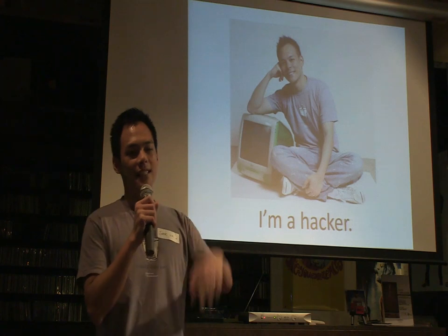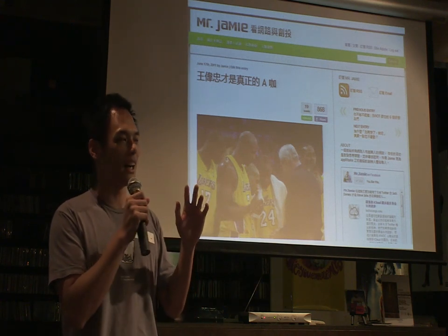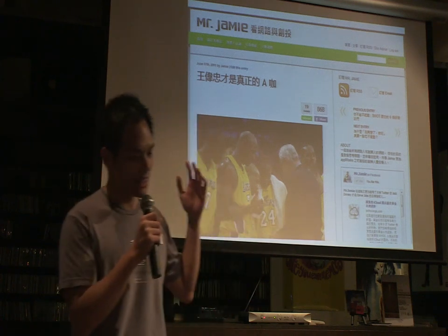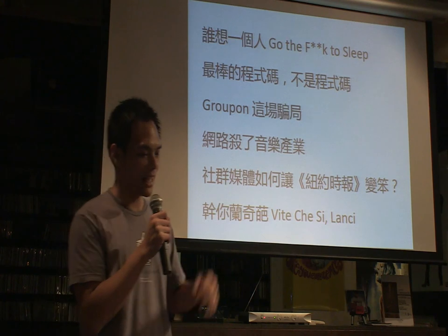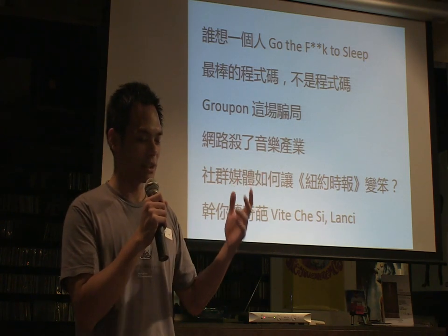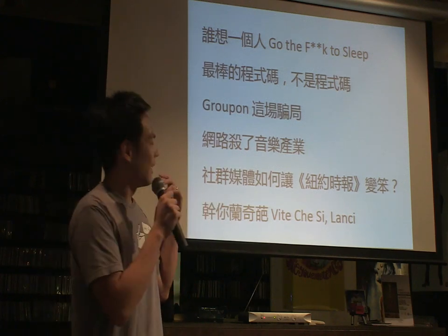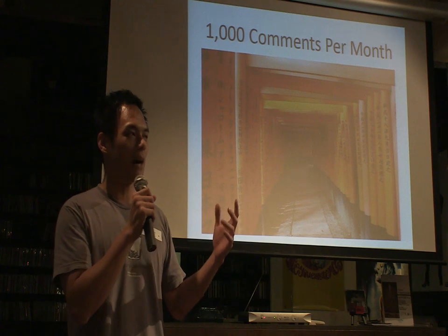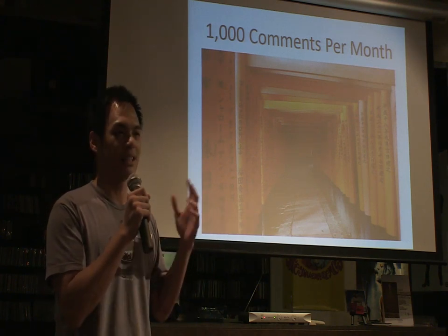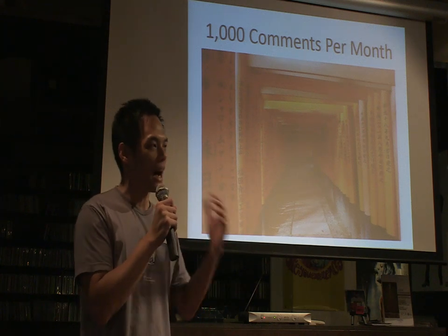Another reason is I've been blogging exactly two years today. I'm not one of your most conservative bloggers — I actually always like to choose very controversial topics. For example, here's a list of topics I wrote about: who wants to go to the box to sleep, Groupon is a scam, internet kills the music industry, social media makes New York Times stupid. Because of this, I get a lot of comments — more than a thousand comments per month. But the truth is a lot of these comments are not very good and not adding to the conversation. That's why I think it's very important that we learn how to disagree.